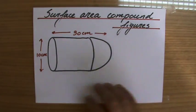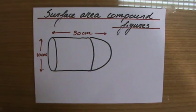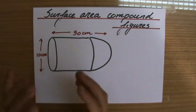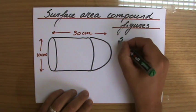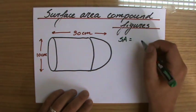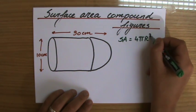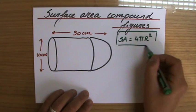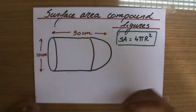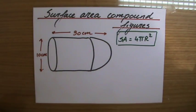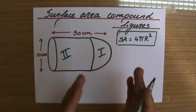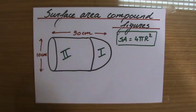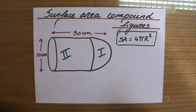We're going to look at this question together. We have to calculate the surface area of this compound figure, which consists of a cylinder and a hemisphere attached to it. The question gives us that the surface area of a sphere is 4πr². To find the total surface area, I'll structure my calculations into two parts — Roman numeral I and Roman numeral II — find the surface area of each part, then add them together.